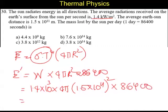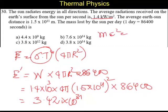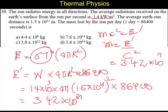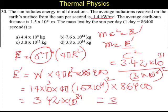This gives approximately 3.42 into 10 power 31 joules. This is the energy lost by the sun per day. Using E = mc², mass M equals E divided by c², which is 3.42 into 10 power 31 divided by (3 into 10 power 8) squared. This gives 3.8 into 10 power 14 kg. So the answer is D.